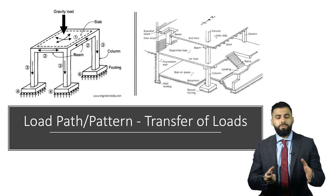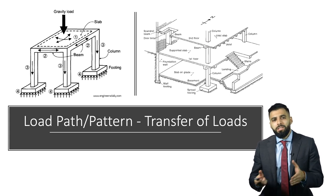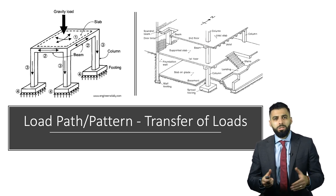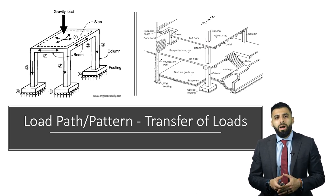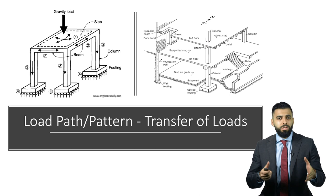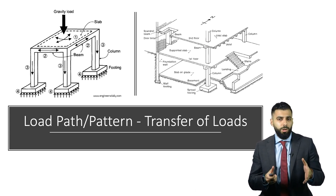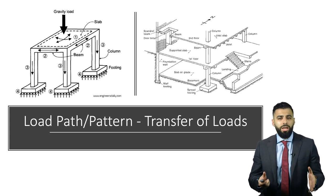Once you have categorized your loads into point loads and distributed loads, the next step is to understand the load path. As you can see on the screen, in a building, the load exerted on the slabs is transferred to the beams, the beams transfer it to the columns, the columns transfer it to the foundation, and the foundation dissipates that load into the soil. This is the common loading pattern you would expect from a typical concrete structure.